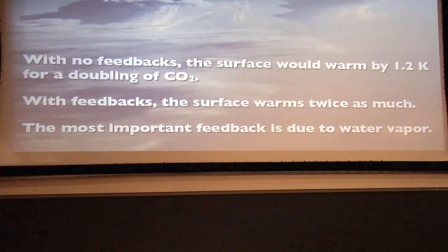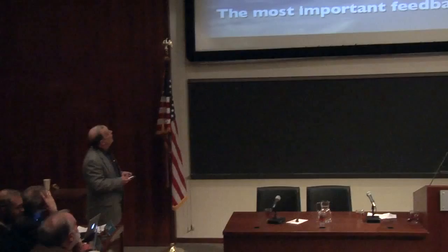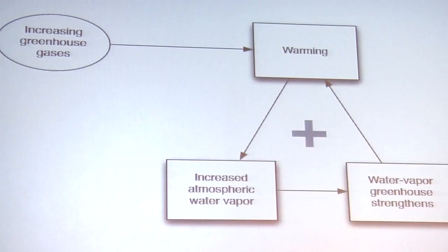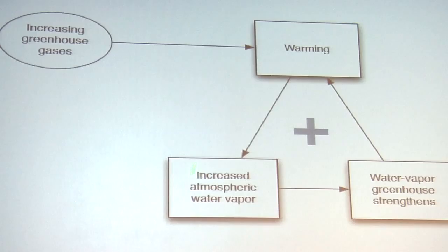Okay. Last subject, feedbacks. I just showed you that without feedbacks, the surface would warm by about 1.2 Kelvin for a doubling of CO2. With feedbacks, it doubles by a bit more than twice that much. There's a whole long list of feedbacks like melting ice and snow and so on. But the single most important one, arguably, is the water vapor feedback, and that's the only one I'm going to talk about here.